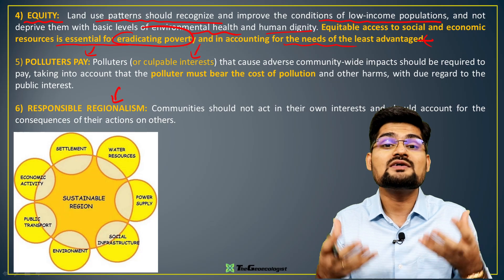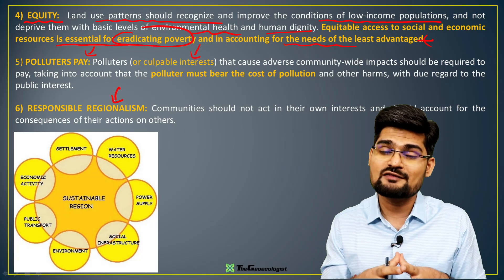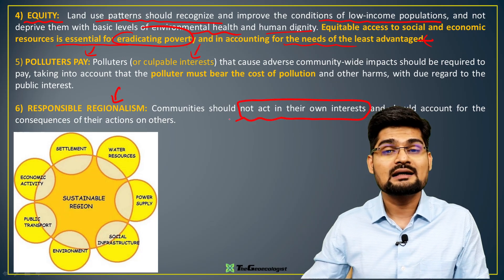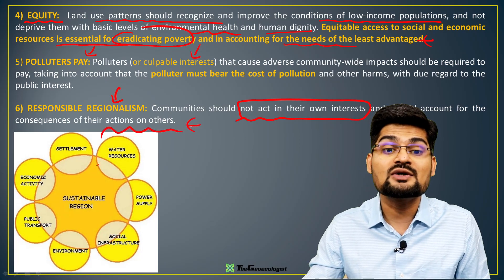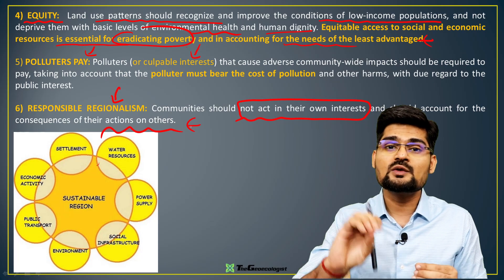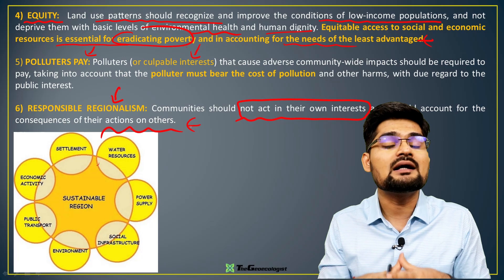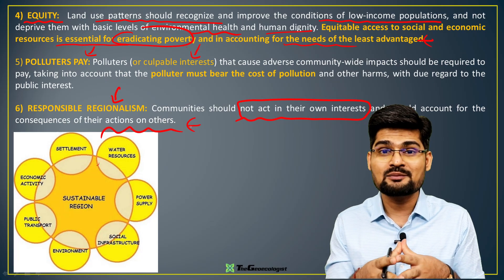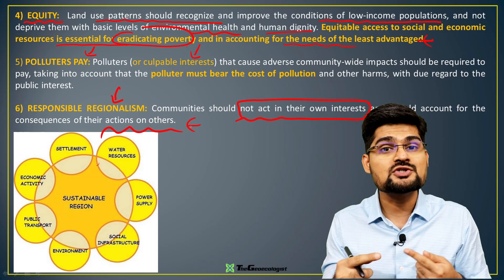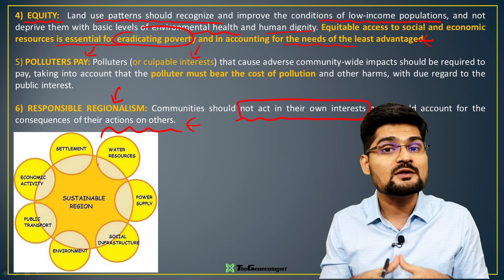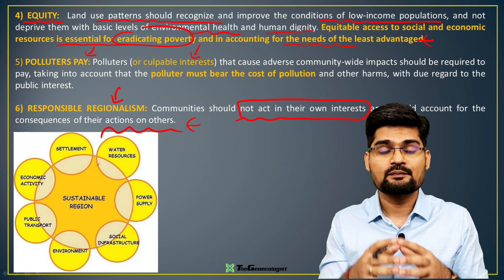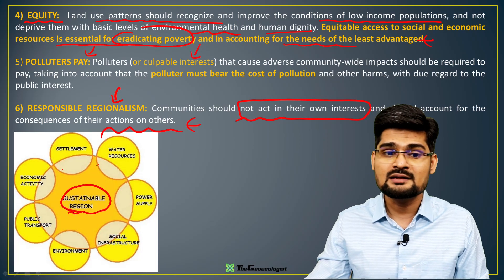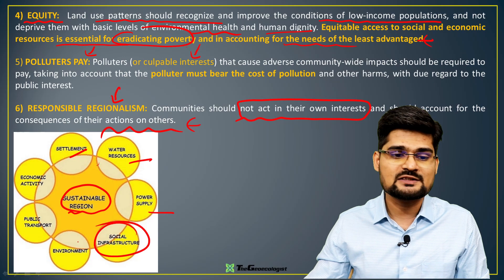The sixth and final principle is responsible regionalism — communities should not act only in their own interests but must account for the consequences of their actions on others. For example, throwing garbage into a river harms the entire system: microplastics get deposited over time, enhancing ocean pollution and feeding back into climate change. This reflects the ecological principle of cyclic pathways — nothing is static, everything dynamically comes back to us.